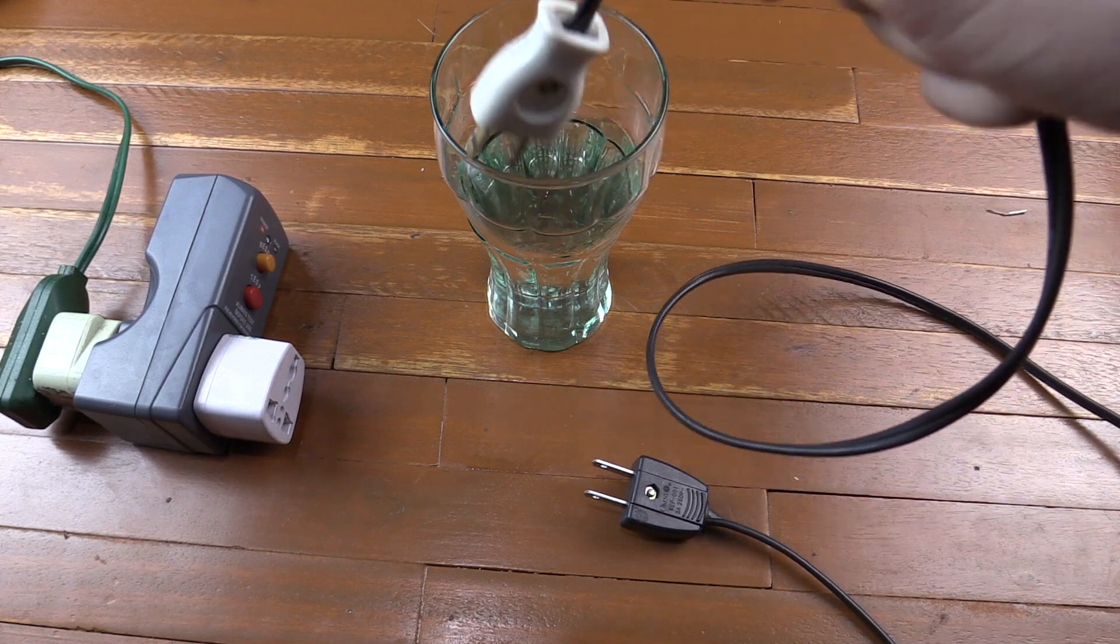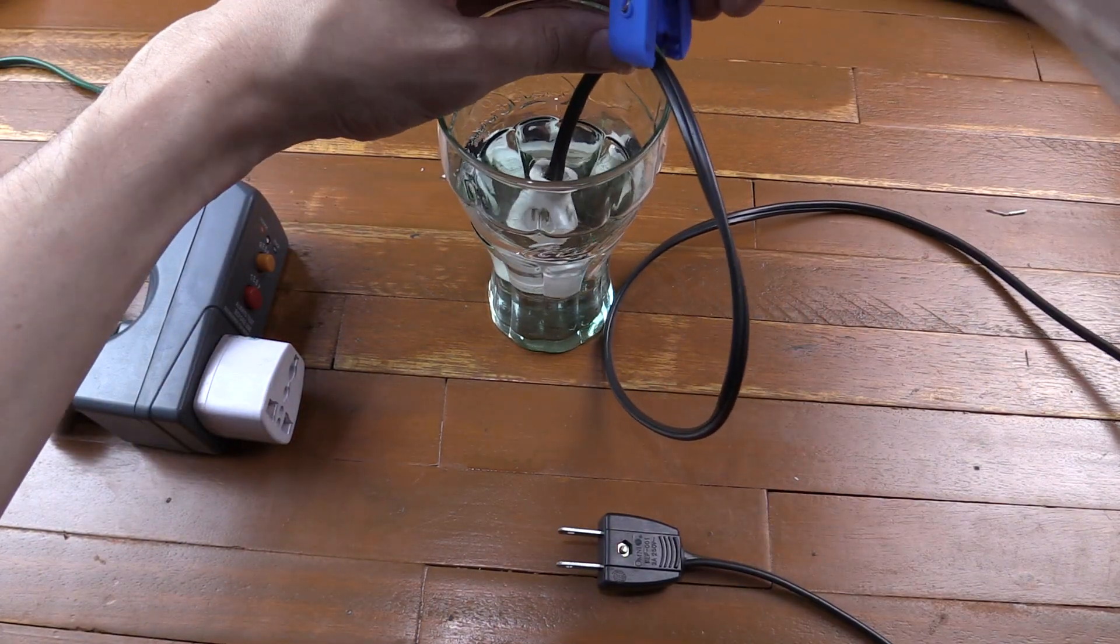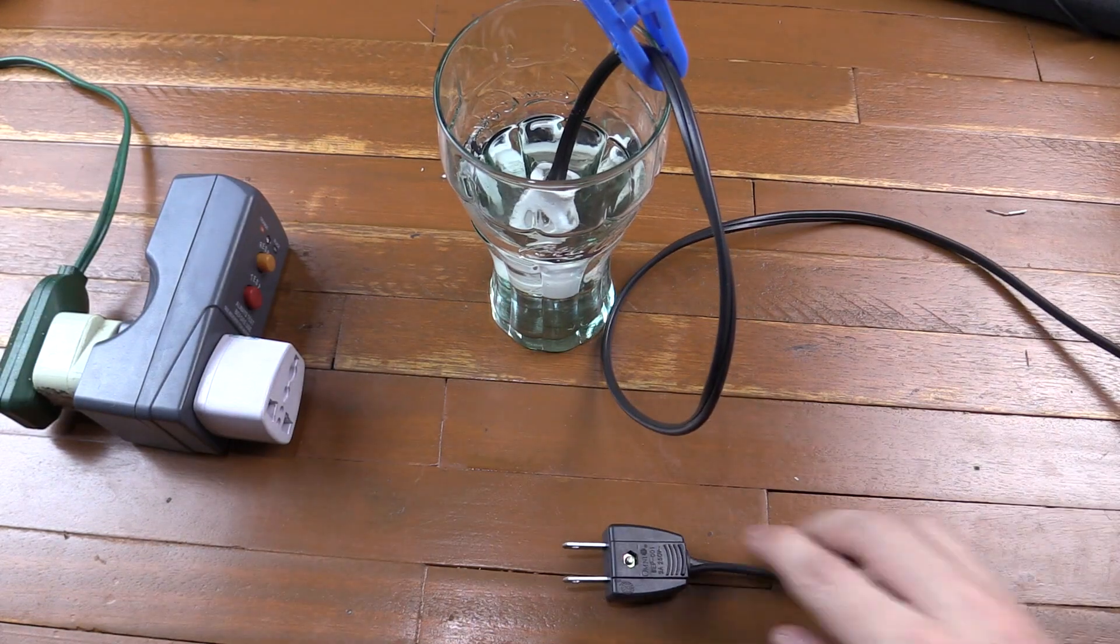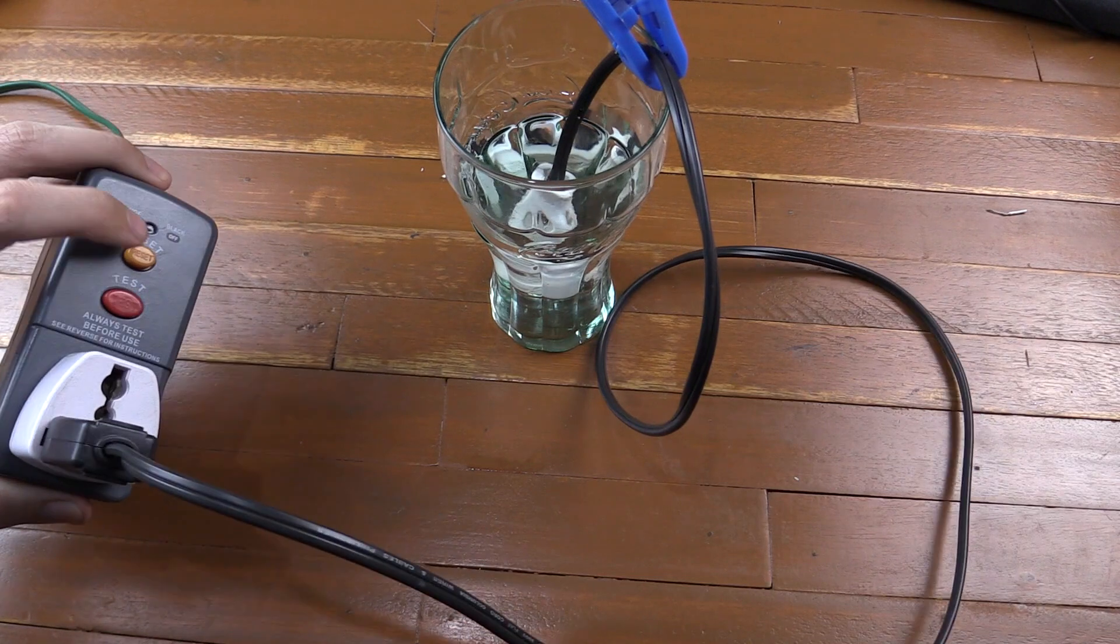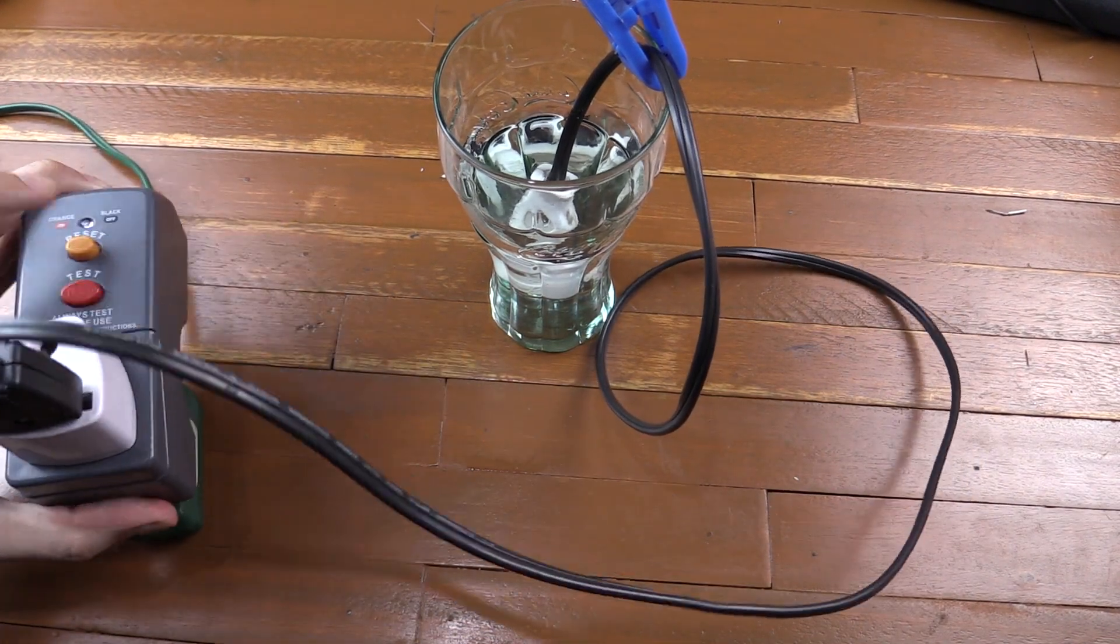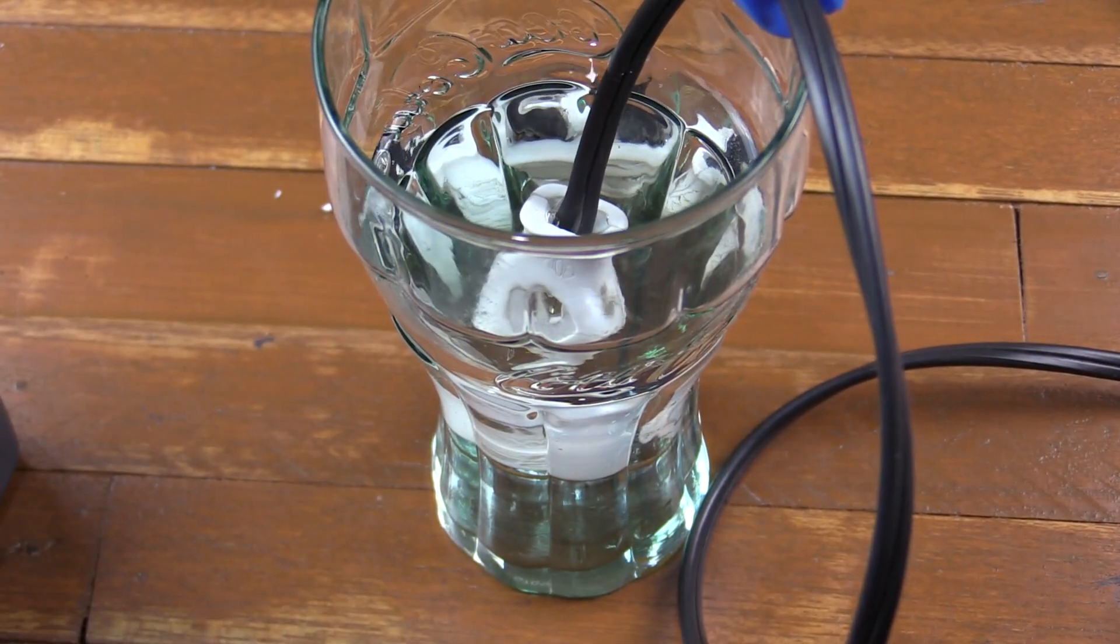So I'm going to start by putting one end into the water and I'm just going to use a clip to hold it in place. And then the other end I'm going to plug into our sockets. And then I'm going to turn on the water by pressing the reset button on my RCD. And then I'll zoom in on the water. You should see small bubbles appearing.